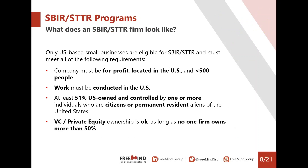What does an SBIR or STTR firm look like? Only US-based small businesses are eligible. The company must be for-profit, located in the US with fewer than 500 full-time employees, the work must be conducted in the US, and at least 51% of the company must be US-owned and controlled by one or more citizens or permanent residents. Regarding VC or private equity: an awardee may be owned and controlled by more than one VC, hedge fund, or private equity firm, so long as no single such firm owns the majority of the stock.